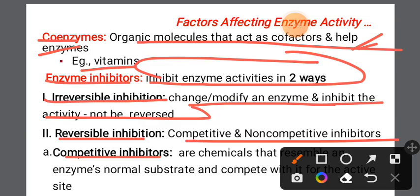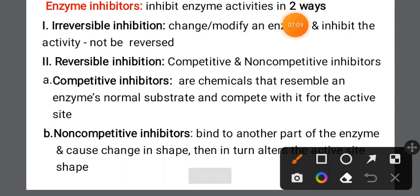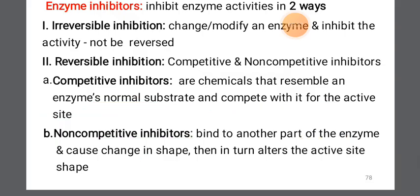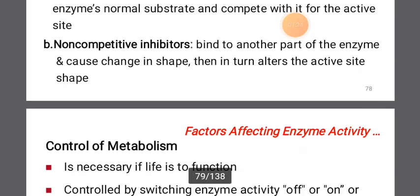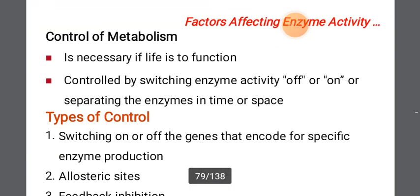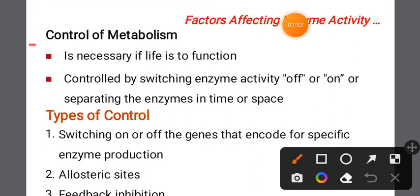Competitive inhibitors compete with the normal substrate for the active site. Non-competitive inhibitors bind to another part of the enzyme, changing its shape and thus changing the active site shape, preventing normal substrate binding.